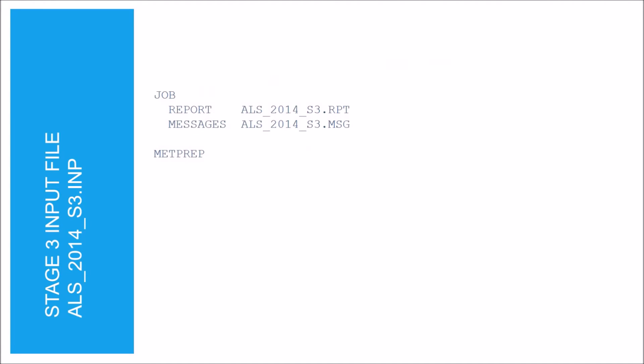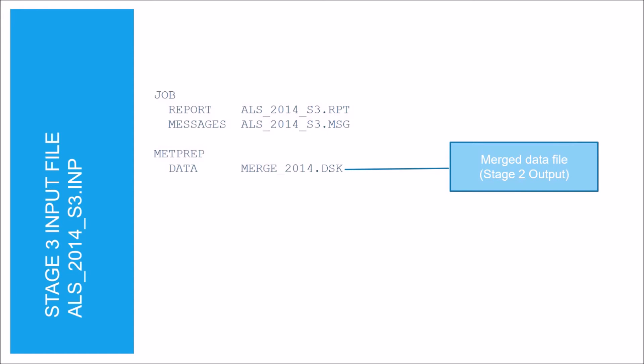The report keyword is used to specify the file name where all the summary information is written, and the messages keyword specifies the file name where all errors, warnings, and informational messages are written. The data keyword is used to specify the file where all of the meteorological data was merged — this is the output file from Stage 2.